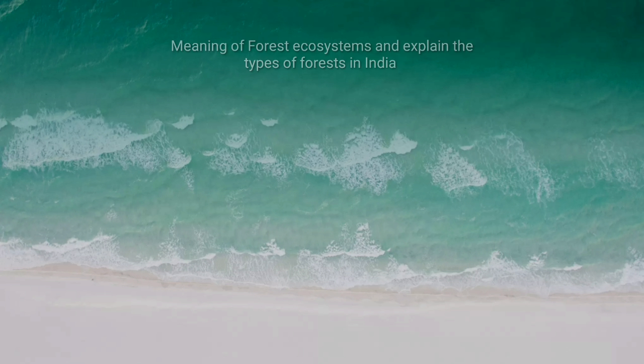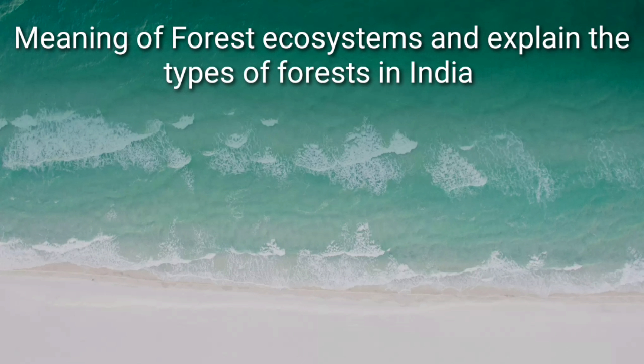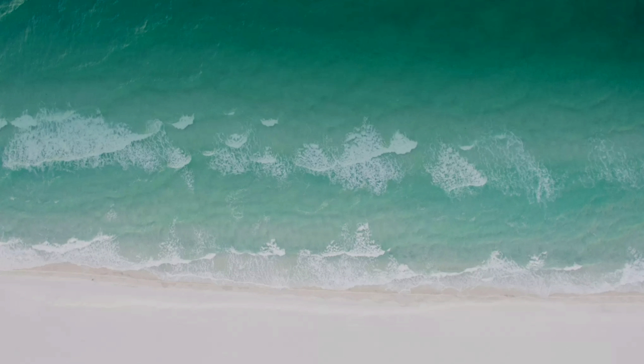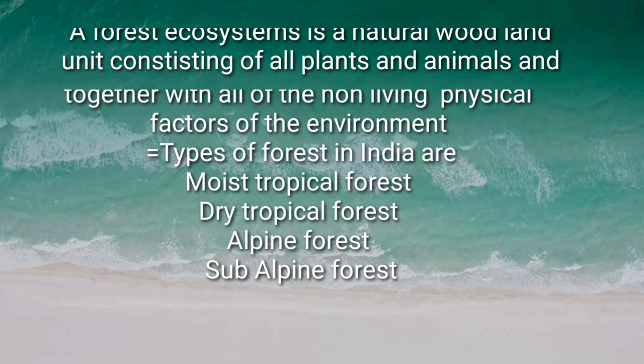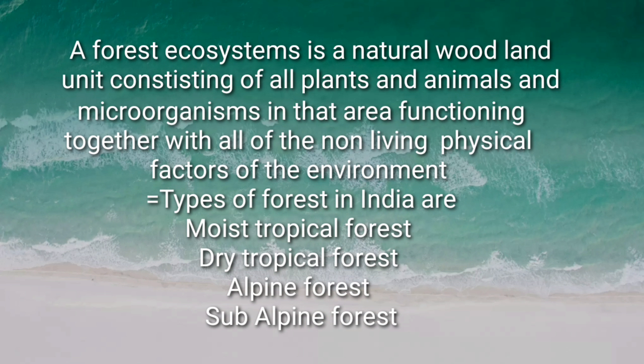Next: meaning of forest ecosystem and types of forests in India. A forest ecosystem is a natural woodland unit consisting of all plants, animals, and microorganisms in that area, functioning together with all of the non-living physical factors of the environment.